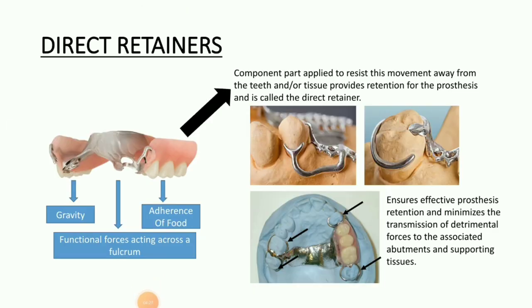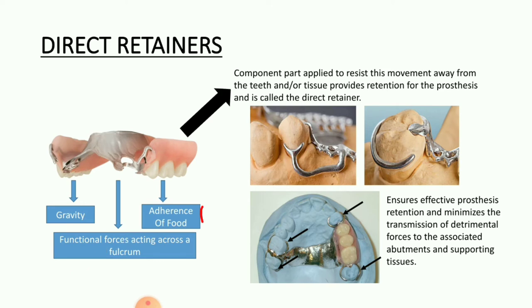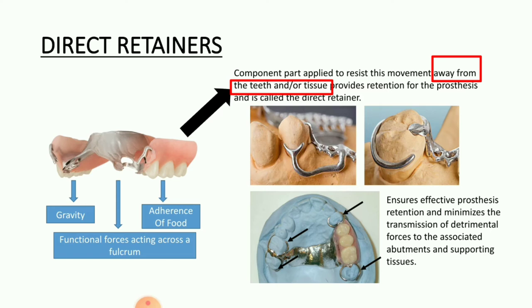Coming on to direct retainers. Whenever the cast partial denture is placed into the oral cavity, there are three factors usually responsible for the dislodgement of the denture. First is gravity — in the case of a maxillary denture, it might be responsible for dislodgement. Second are functional forces which act across a fulcrum line, and third is the adherence of food. In order to prevent dislodgement due to these factors, a component is applied to resist movement away from the teeth or tissue — this provides retention for the prosthesis and is called the direct retainer.